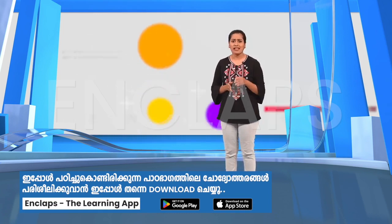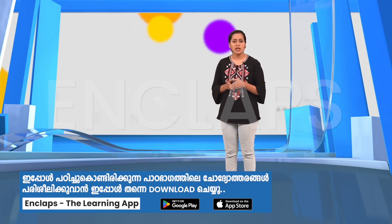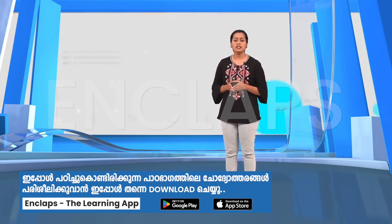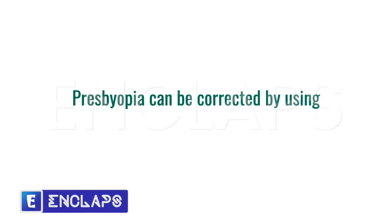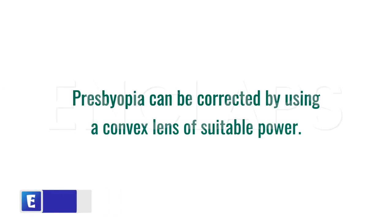Have you ever noticed that elderly people keep the newspaper a little away from their eyes when they read it? The reason behind this is presbyopia. It can be corrected by using a convex lens of suitable power.